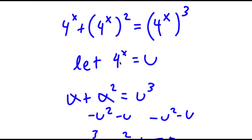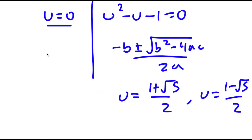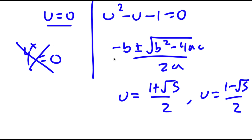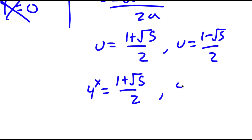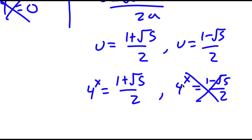Remember we set 4 to the power of x equal to u. So first, 4 to the power of x equals 0 has no solution because you can't raise a number to a power and get 0. For 4 to the power of x equal to 1 minus the square root of 5 over 2 — since 1 minus the square root of 5 is negative and you can't raise a positive base to a power and get a negative result — this is also no solution.